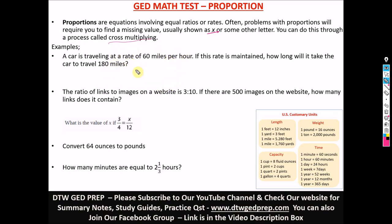Okay, so the first example here says a car is traveling at a rate. When you see rates, I've done rates, so please do watch that video. A rate of 60 miles per hour. It means this per hour is per one hour. That's rate. So 60 miles per hour. If this rate is maintained, how long will it take the car to travel 180 miles?